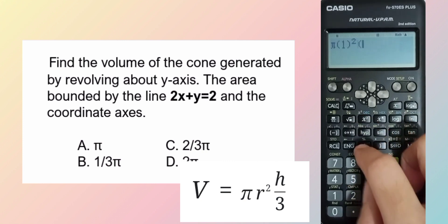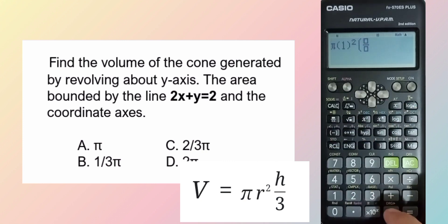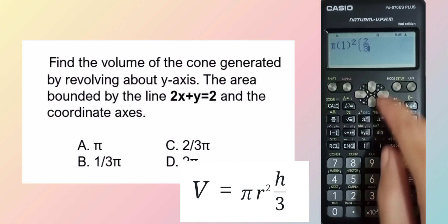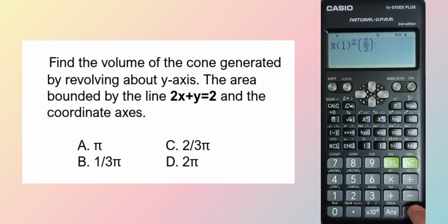So the formula is equal to pi r, which is equal to 1, squared times y, which is the height, which is equal to 2 over 3, and obviously it is letter C, 2 thirds pi.